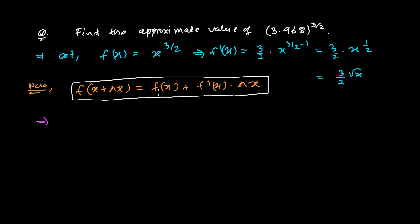After writing the formula, we need to choose a value for x and find the resulting Δx. We need to choose x in such a way that it's confirmed from the number we have — the base 3.968 with power 3/2.